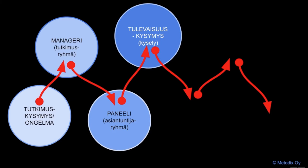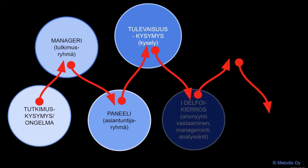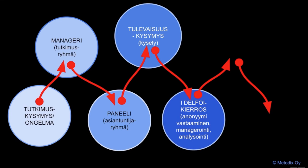Kun manageri kutsuu panelistit vastaamaan kyselyyn, käynnistyy ensimmäinen Delphoi-kierros. Panelistin vastaus koostuu kahdesta osasta: ensimmäinen on tyypillisesti asteikkovastaus ja toinen perustelu tälle skaalavalinnalle. Panelistit saavat managerin säätelemällä aikataululla näkyviinsä myös muiden panelistien vastaukset, joita he saavat myös kommentoida, samoin kuin he voivat muuttaa omia alkuperäisiä vastauksiaan koko vastaamisajan eli kierroksen.